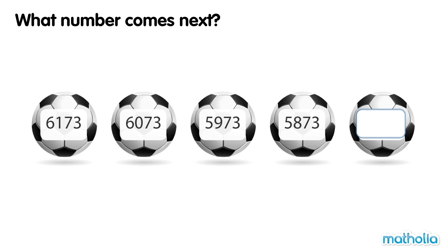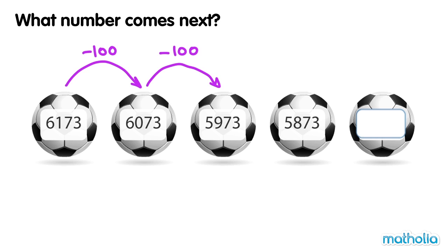What number comes next? 6173 minus 100 equals 6073. 6073 minus 100 equals 5973. In each step the numbers go down by 100. 5873 minus 100 equals 5773. The next number is 5773.